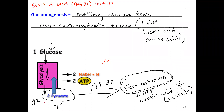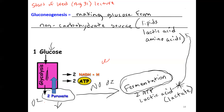The body can metabolize lactic acid and turn it into glucose. Taking a non-carbohydrate substance like lactic acid and converting it into glucose that the body can use — that's an example of gluconeogenesis. So let's move on with lactic acid metabolism.